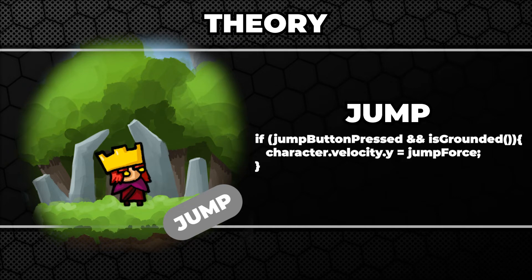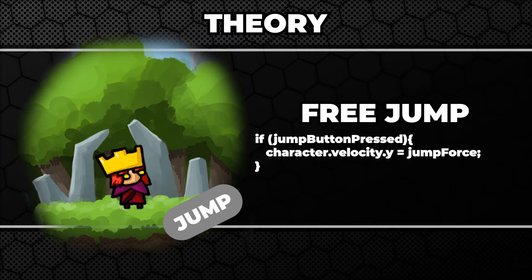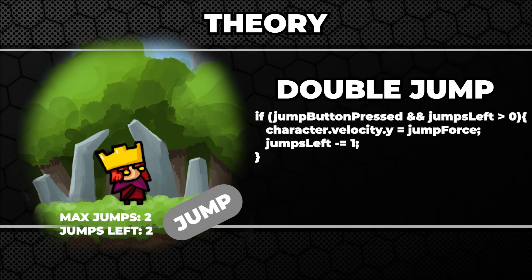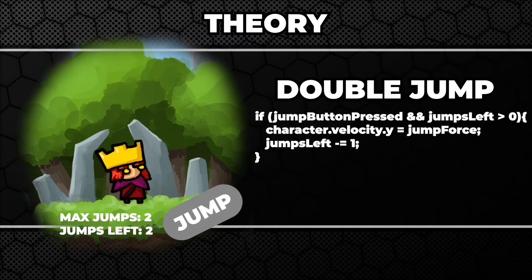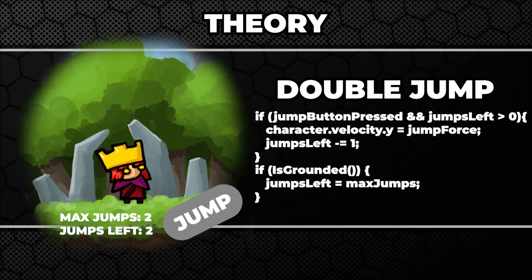However, if we want to allow the character to jump multiple times, we simply remove this check. If we want to restrict the number of jumps, we simply have to track how many jumps the character can still perform, and reset the value every time the character lands on the ground.